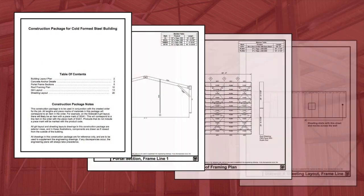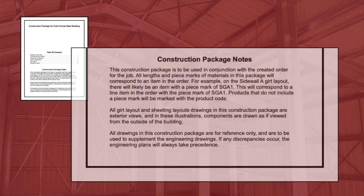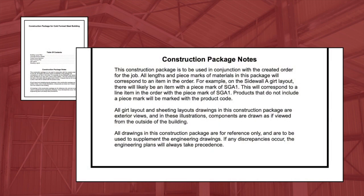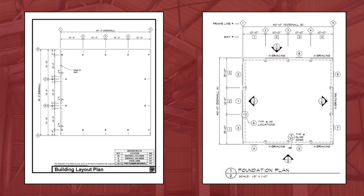The second document that will make your assembly easy is the construction package. The construction package can be 20 pages or more, depending on the complexity of your building. If there are any important notes about your building, they will be shown right on the front page below the table of contents. The first drawing in the construction package is the layout plan. Note the diamonds with the numbers across the top — these are the same markers we had on the engineering drawings, used to identify the five portal frames on our building.